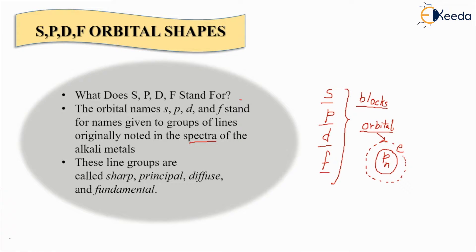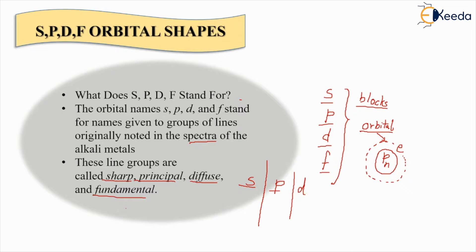What do we mean by sharp, principle, diffuse, and fundamental? That means if I have S and P, both of them have a sharp structure - a particular way of the orbital, a particular direction and shape in which the electron will move. That will be very distinct and different from each other. The S orbital will be different from P, the P will be different from D, and D will be different from F. Thus these are called sharp, principle, diffuse, and fundamental.